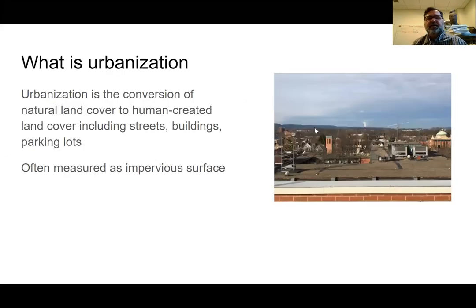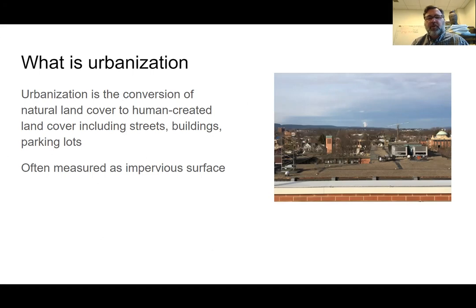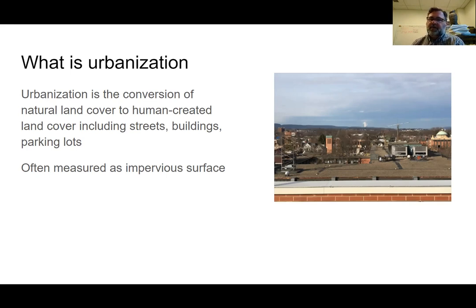First, let's define urbanization. It's the conversion of natural land cover — like a forest, field, desert, or swamp — to land cover dominated by human-created structures, or just human land cover, for example, a lawn. But most of the time we consider urbanized areas to be those covered in buildings, streets, and parking lots. Usually, it's easiest to measure the amount of impervious surface when talking about what is urban.